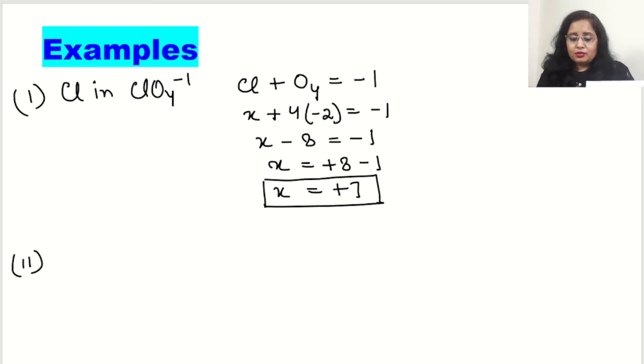One more example we will do. So the example is oxidation state of nitrogen in NO3 minus 1. Now what up here? Nitrogen plus 3 atoms of oxygen and the overall sum will be minus 1. Nitrogen we will assume x, then 3 into minus 2 for oxygen minus 1. Now calculate the value of x.